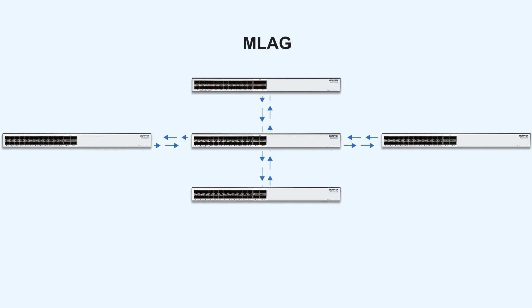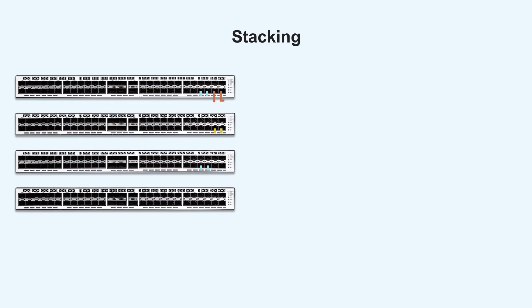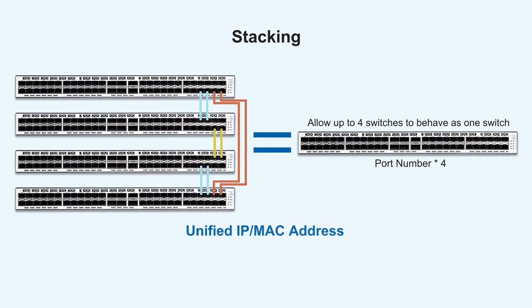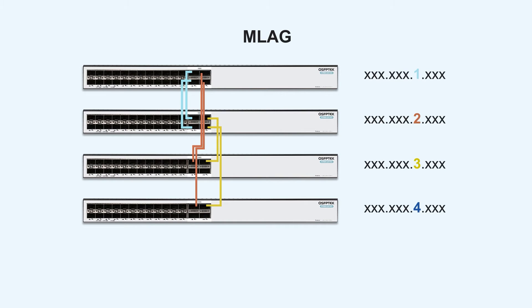It is easy and flexible to add another switch east and west or north and south to form a new MLag. From a management perspective, as the switch stack can be viewed as logically a single device, it has a unified IP/MAC address. Therefore, logging into any device in the device group is equivalent to logging into the main device. MLag doesn't have a unified IP/MAC address, and all devices are independent and can be managed individually.